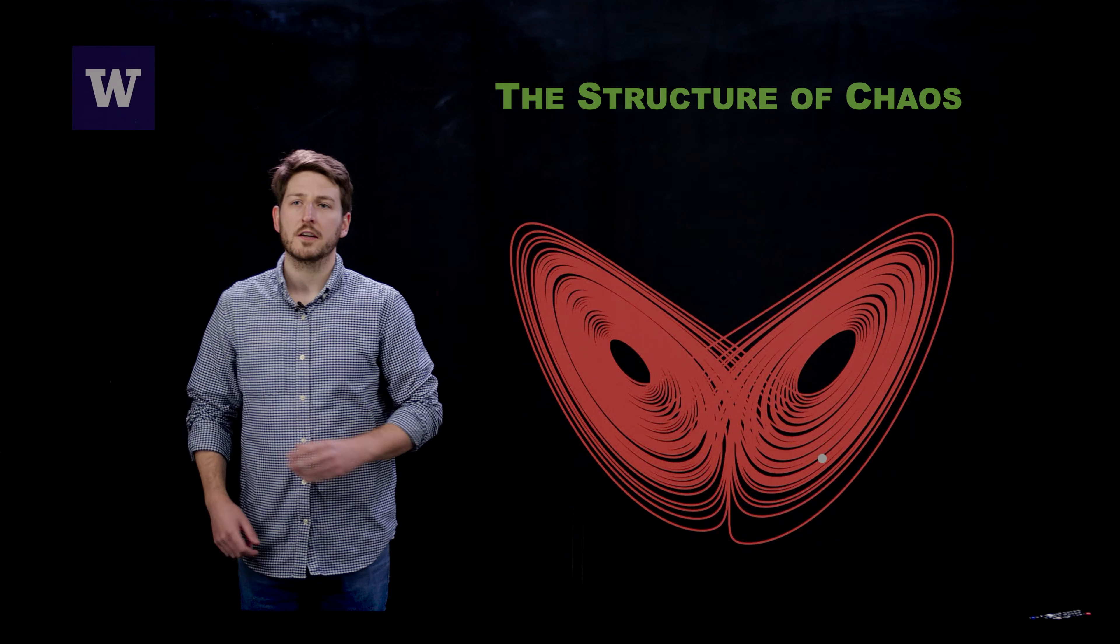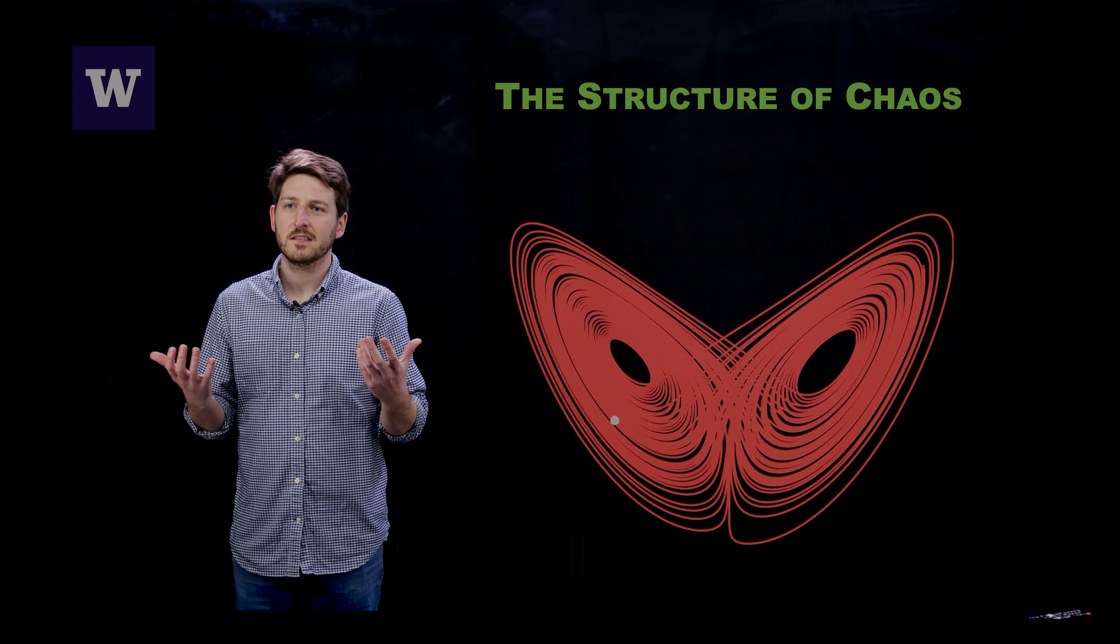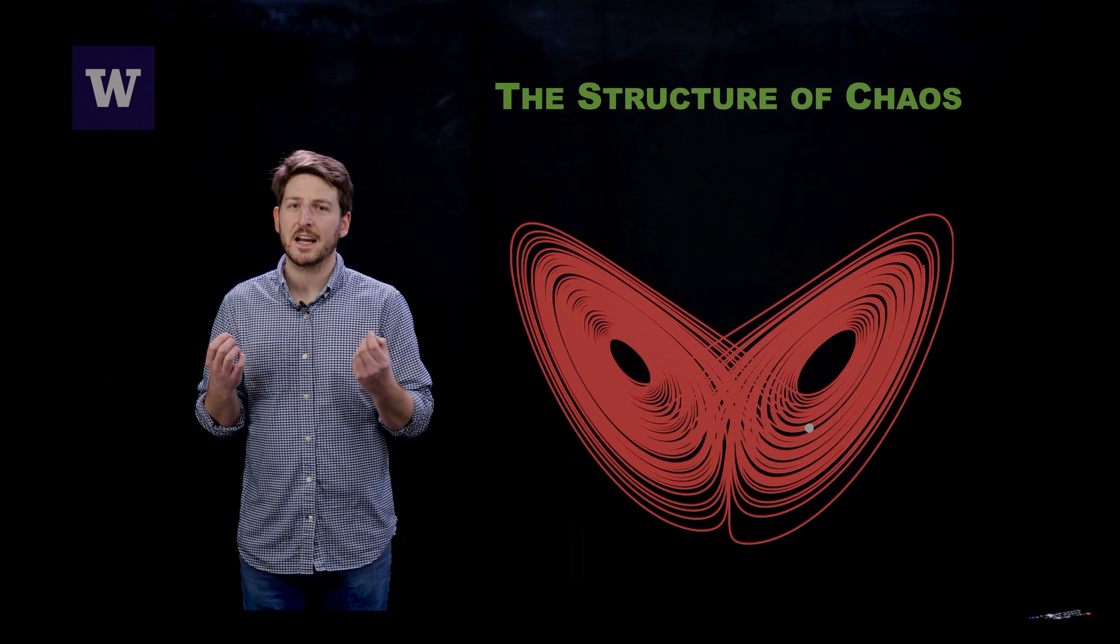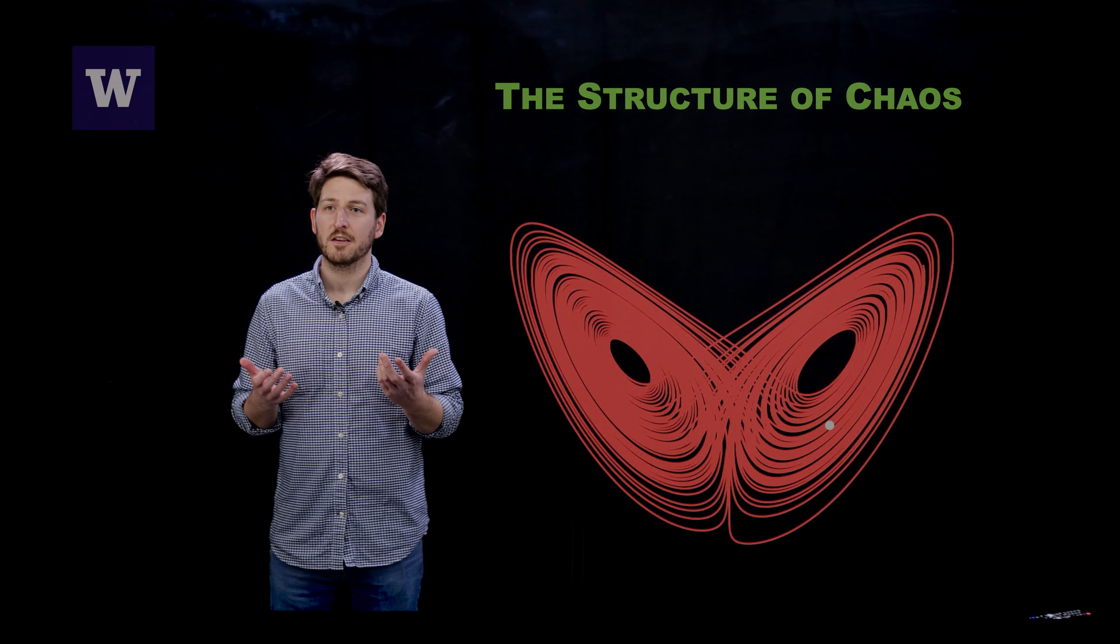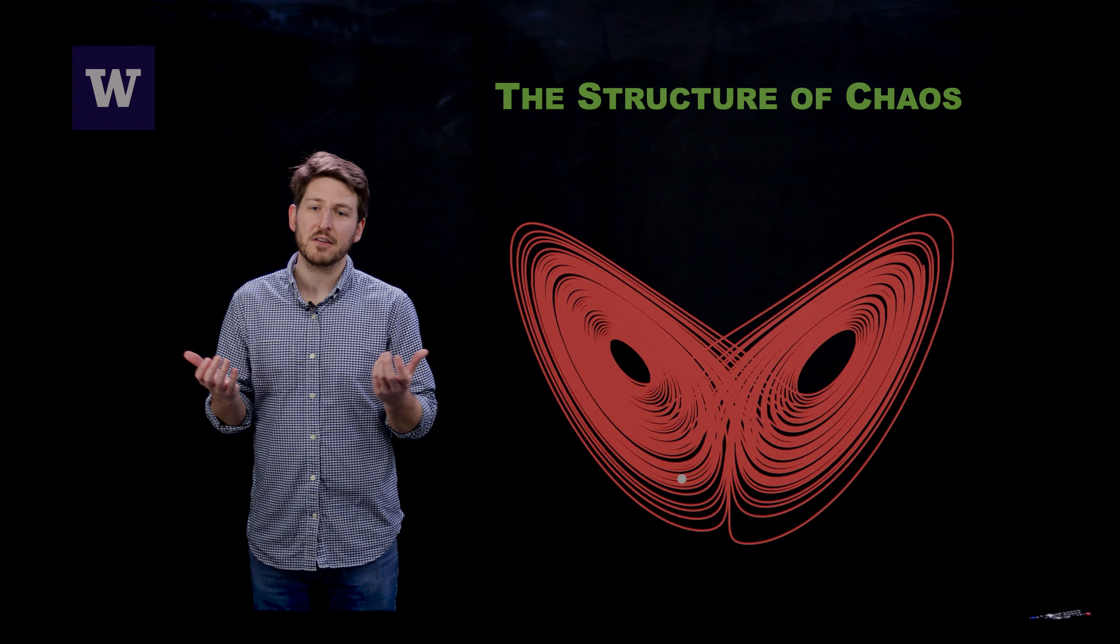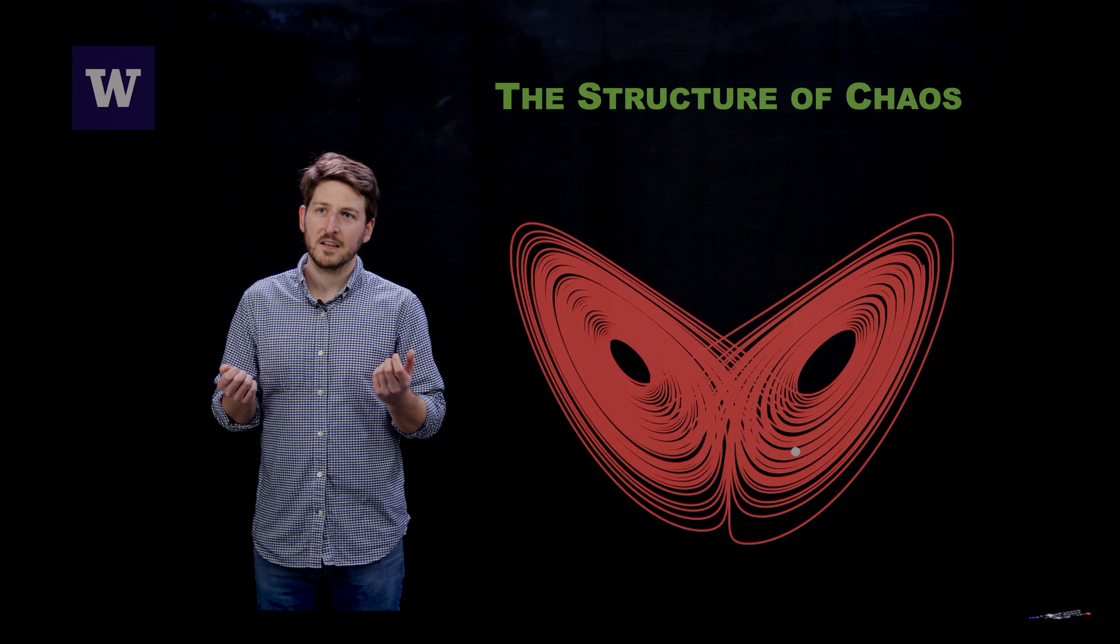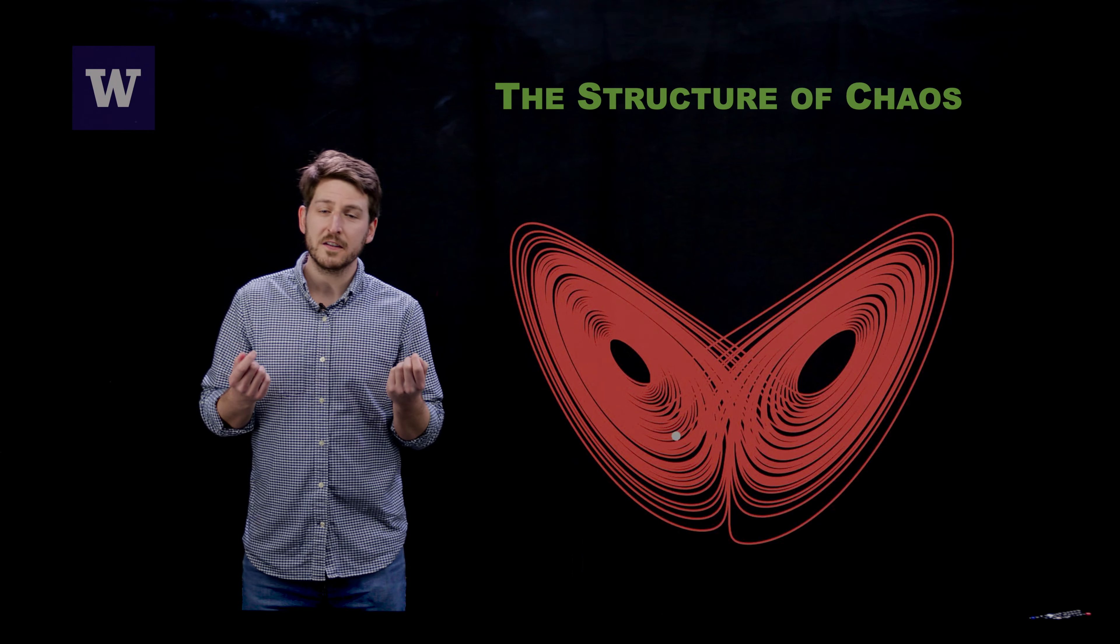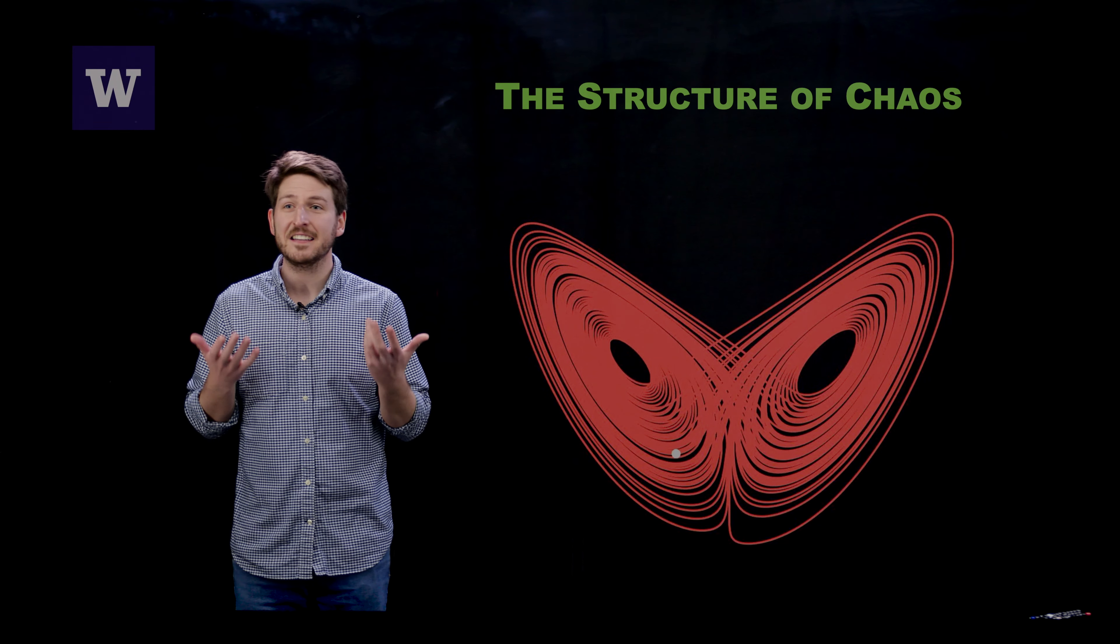Now what I want to talk to you about today is chaos. Chaos is one of the most fascinating and perplexing aspects of modern dynamical systems theory, and in my opinion chaos is one of the most aptly named phenomena in all of mathematics, and the reason for this is that when we see a chaotic system the word that should come to mind is exactly chaos.